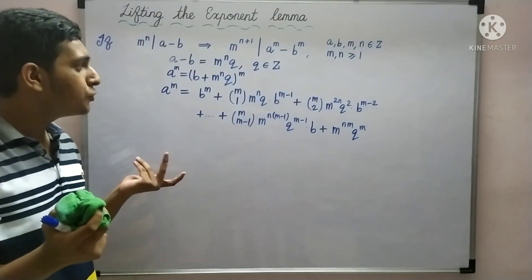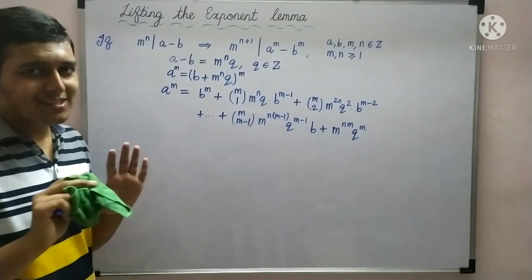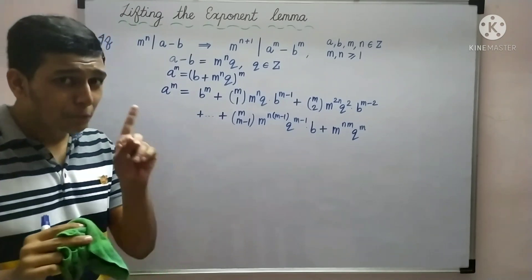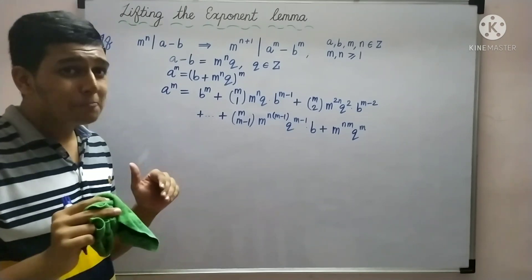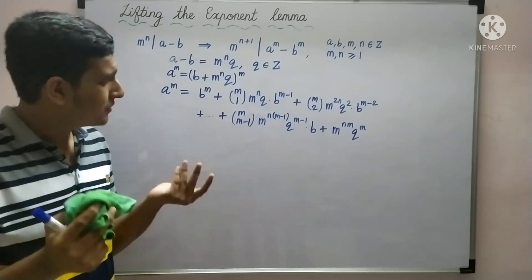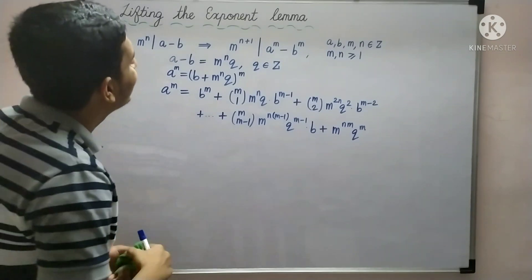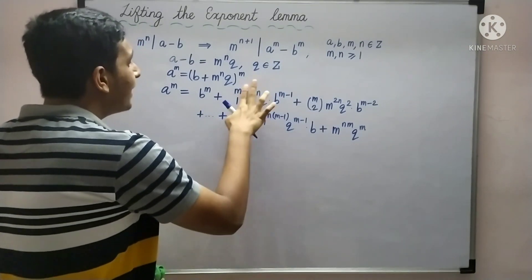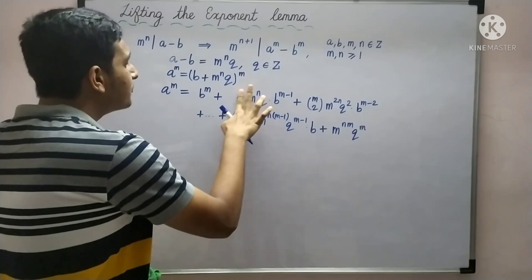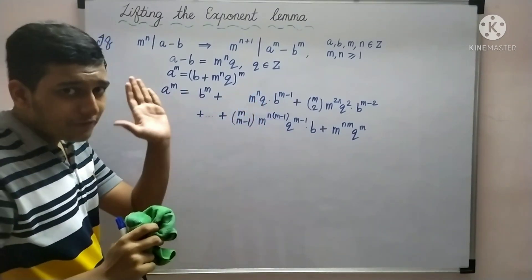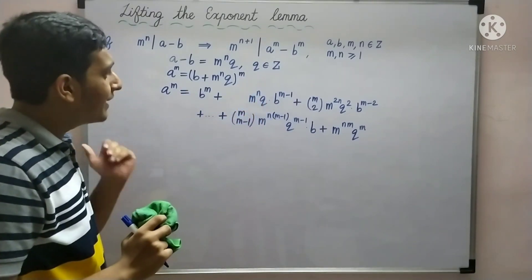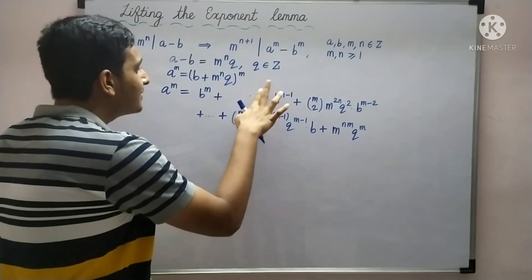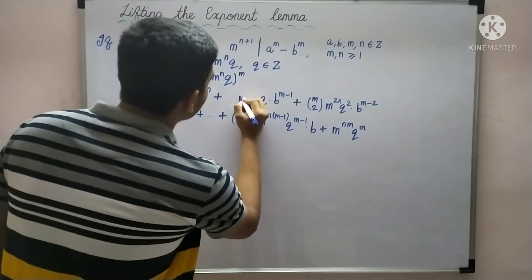Now, what is m choose 1? It is simply m — the number of ways of choosing one object from m distinct objects is simply m. If we replace m choose 1 by m and combine it with the other n factors of m present, we can replace this term by m raised to n plus 1.